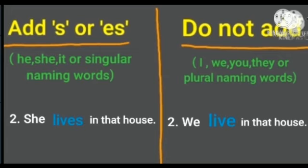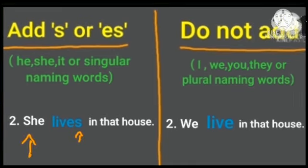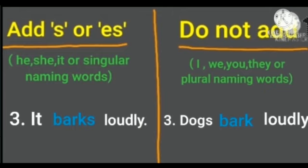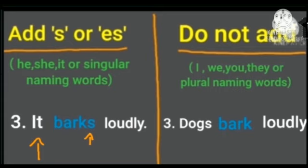Next example — She lives in that house. This sentence has the word she, so we need to add s to the action word. Next column — We live in that house. This sentence has the word we, so we do not add s or es. Last example — It barks loudly. The word it requires s added to the action word. Next column — Dogs bark loudly. Dogs is a plural naming word, so we do not add s or es.